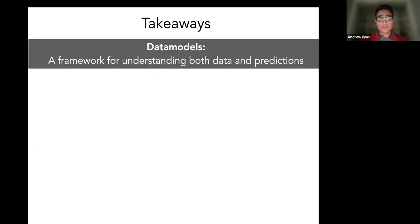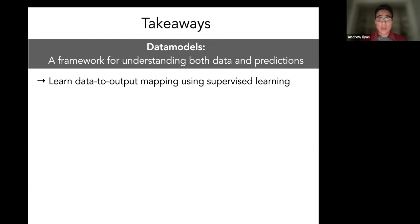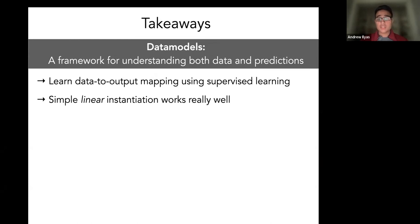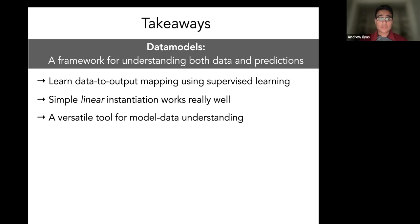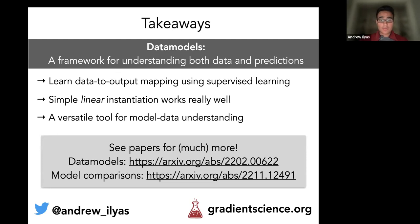To wrap up, in this talk I introduced data models, our framework for understanding both training data and model predictions. The main idea was to learn a data-to-output mapping with supervised learning: sample random subsets of the training set, train models on them, record the outputs, and train a supervised model to predict the output from the subset. A really simple linear instantiation of this idea worked really well. What we got was a versatile tool for model and data understanding that we used to analyze brittle predictions, predict counterfactuals, and compare model classes. The paper links are here, and feel free to contact me with any questions.